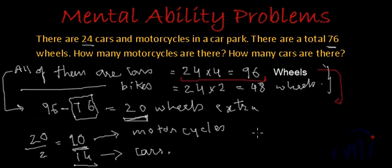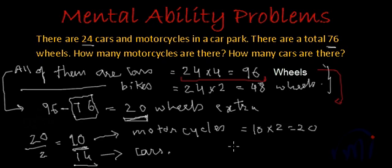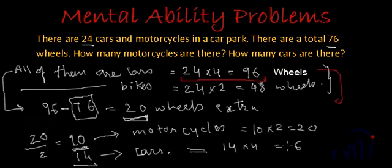Now let's verify our answer — the number of wheels should match 76. If there are 10 motorcycles, how many wheels? 10 multiplied by 2 is 20. And if there are 14 cars, how many wheels? 14 multiplied by 4: 4 fours are 16, carry 1, 4 fours of tens plus 1 is 5, giving 56 wheels.